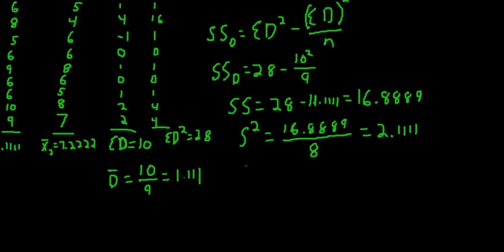To get the standard deviation from the variance, we simply take the square root. So the square root of 2.111, and standard deviation for the deviation scores is 1.4530.